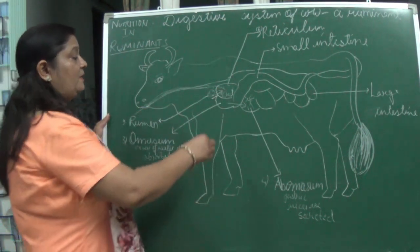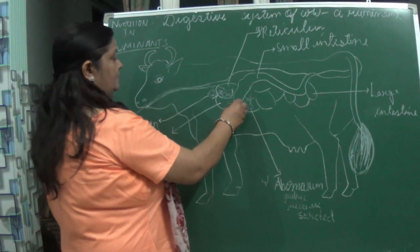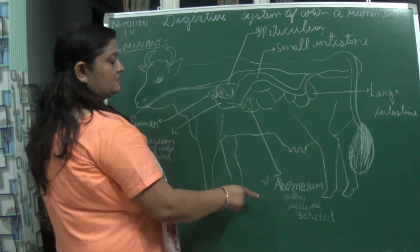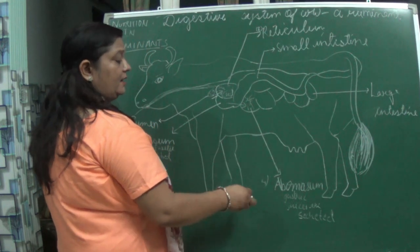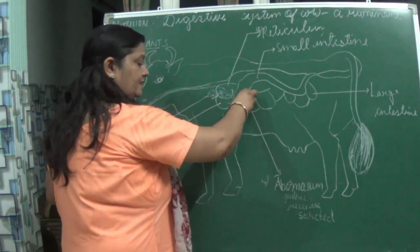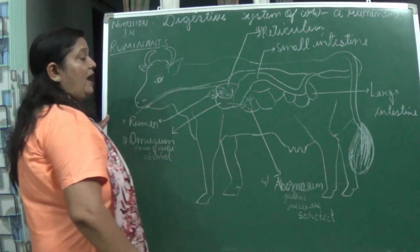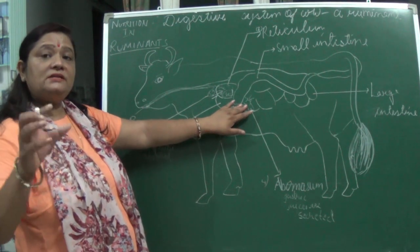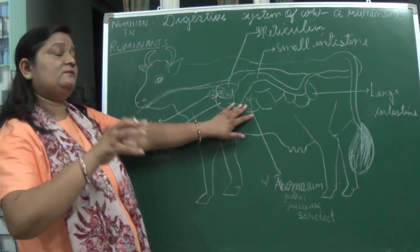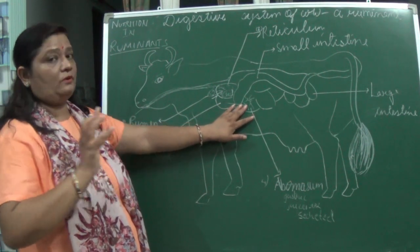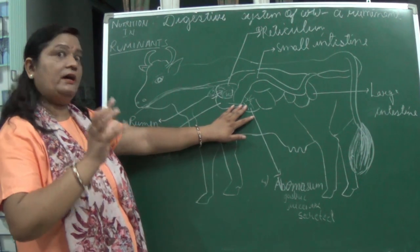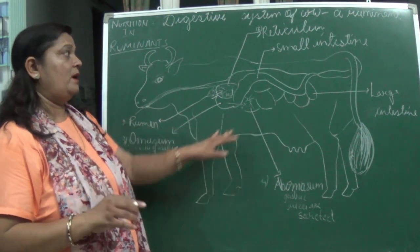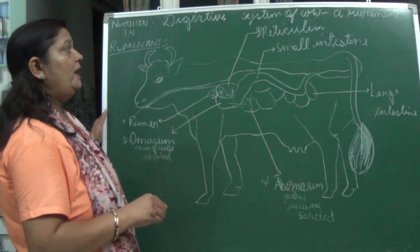After the absorption of excess water in the omasum, this partially digested food passes to the next part of the stomach — the abomasum. Here gastric juices are secreted and act on the food. Digestion takes place here just as it does in the stomach of human beings, which we have studied earlier.